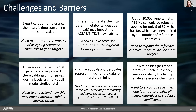Expert curation is time-consuming and not scalable, so automation is necessary. A challenge is that different forms of a chemical — parent, metabolite, degradant, salt — can impact absorption, distribution, metabolism, excretion, and bioavailability. One approach is to have separate annotations for different chemical forms. Additionally, there are 20,000 gene targets, about 3,000 of which are thought to be part of the druggable genome, but we've only robustly applied MIE prediction to nine targets due to limited reference chemical space.